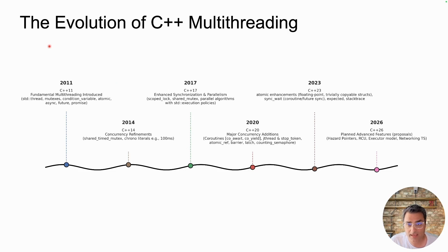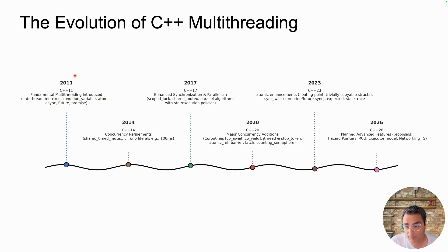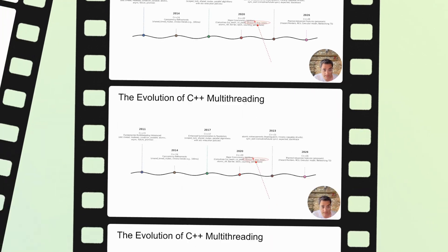Let's take a moment to understand the evolution of C++ multi-threading. In 2011, the fundamental multi-threading constructs were introduced such as std::thread, mutexes, conditional variables, atomic variables, and others — most of which I have covered in my previous videos. 2014 and 2017 were mostly minor updates, but C++20 added some new cool features, and today we are focusing on jthread and stop token in particular.